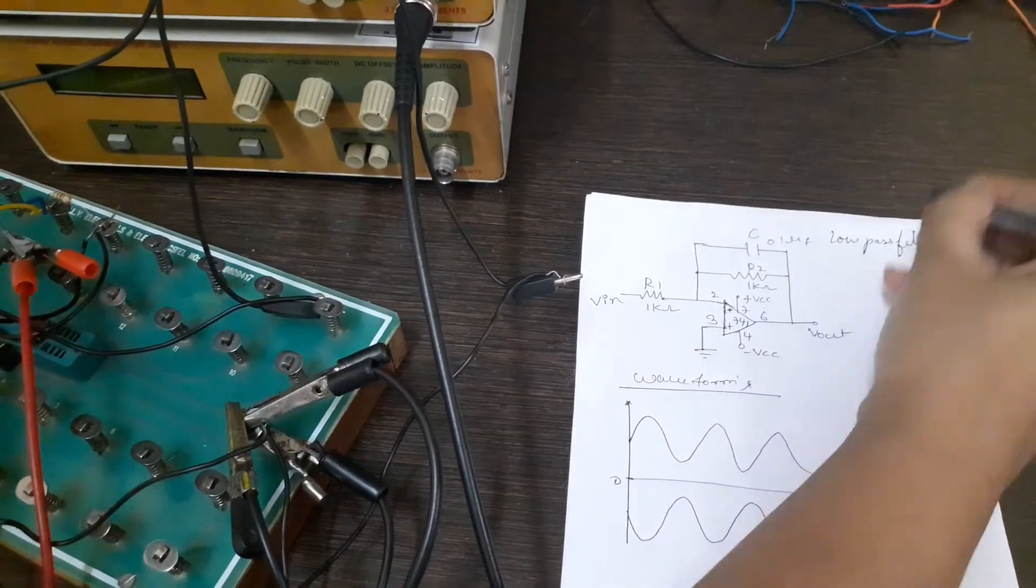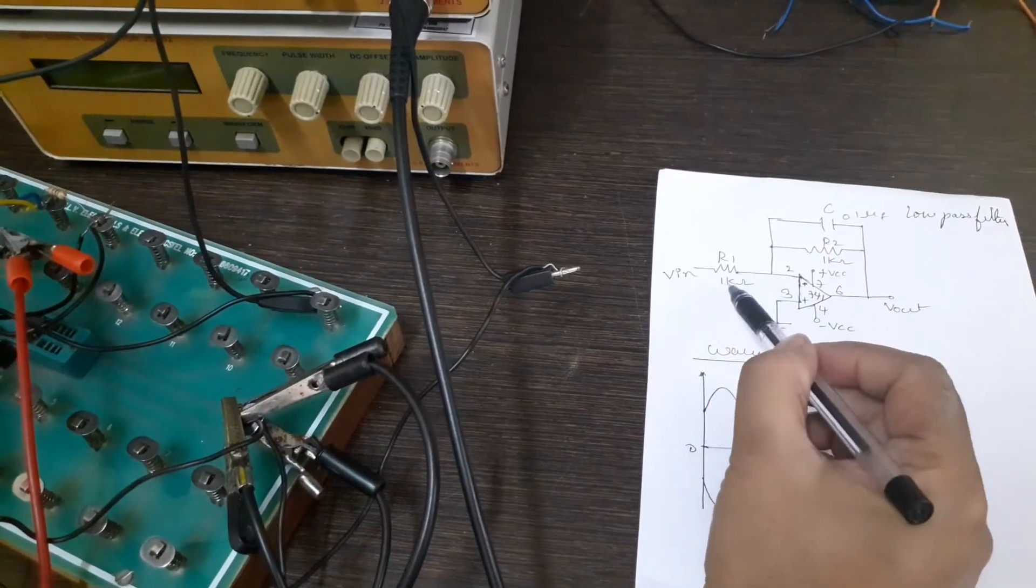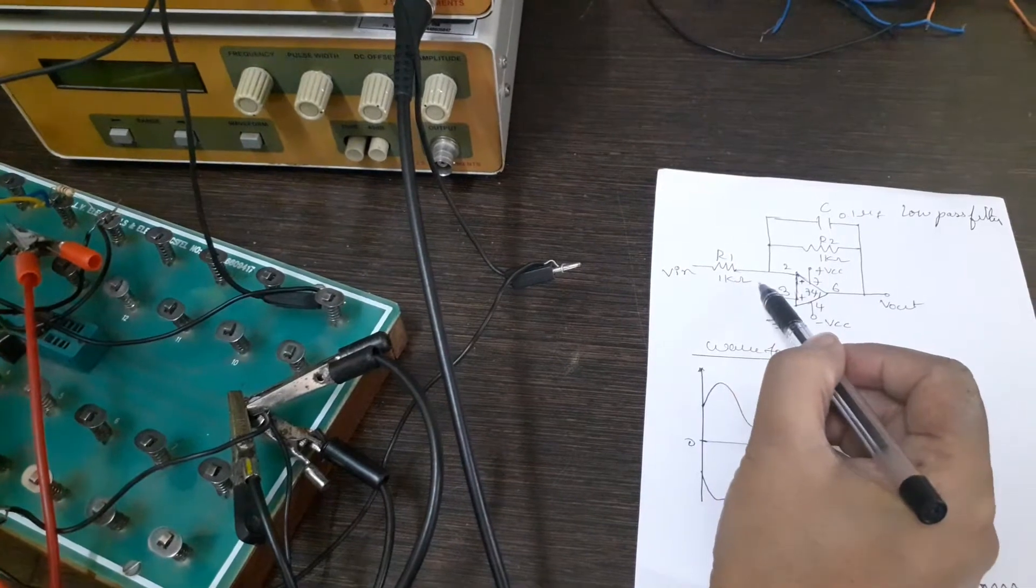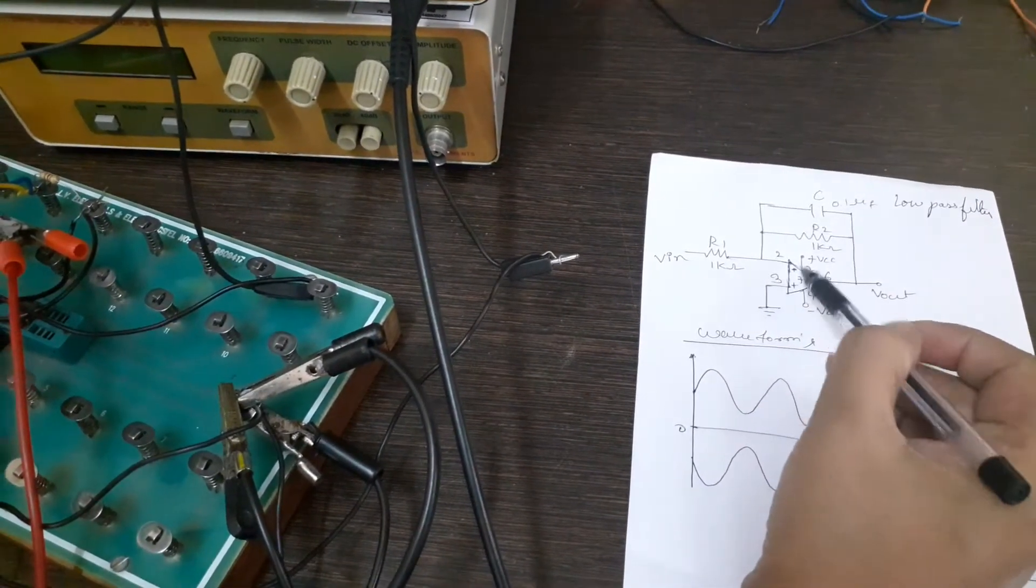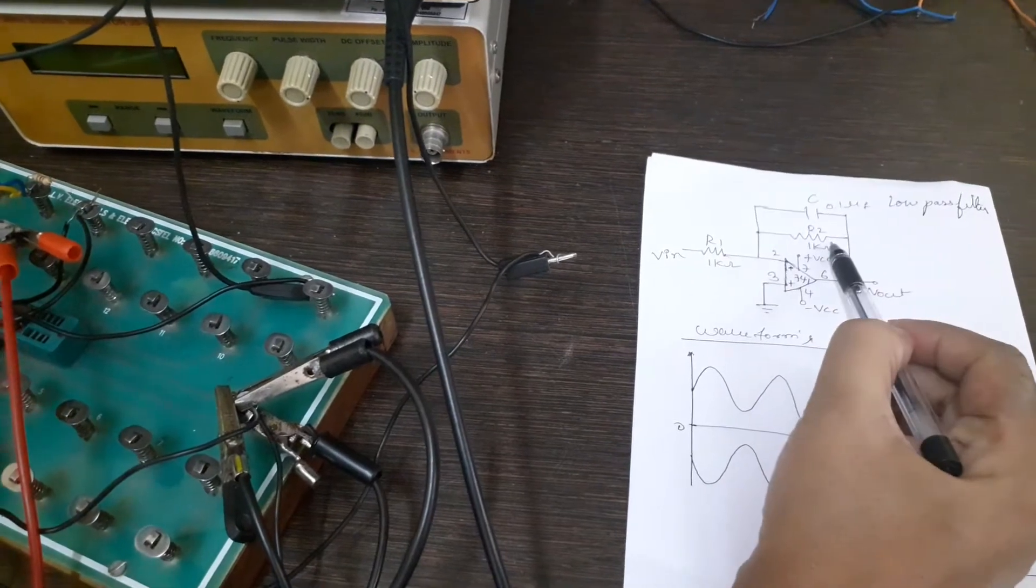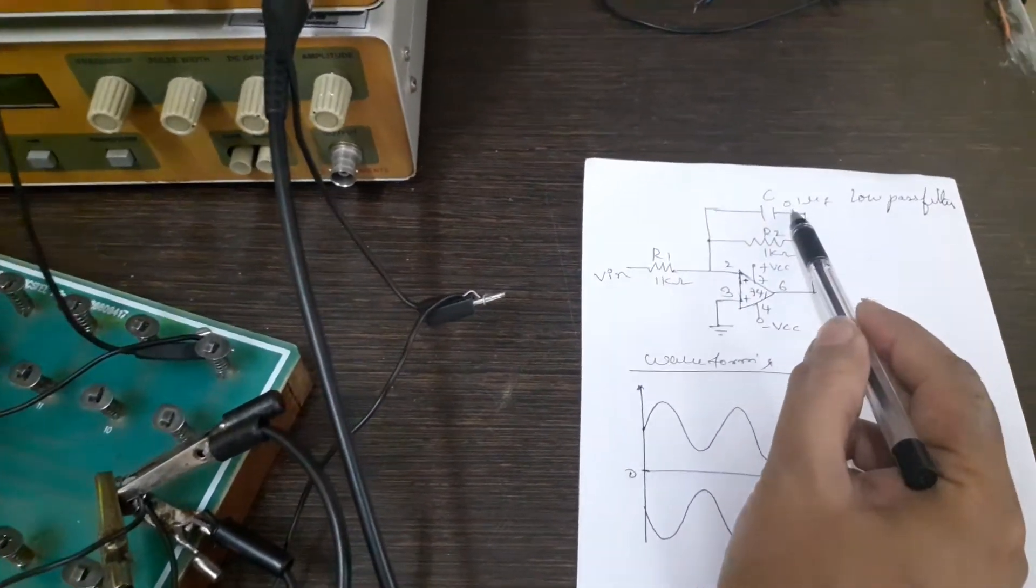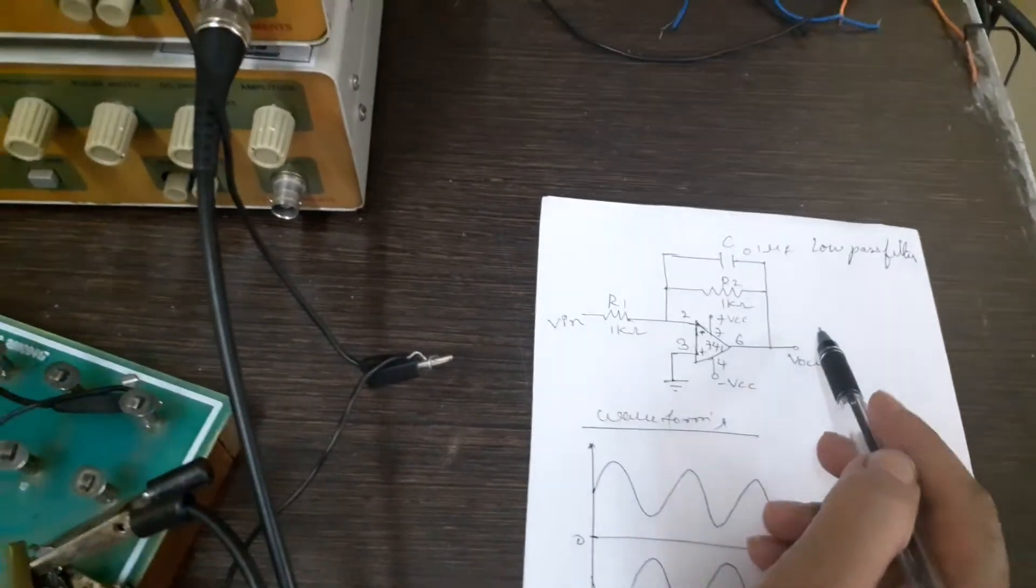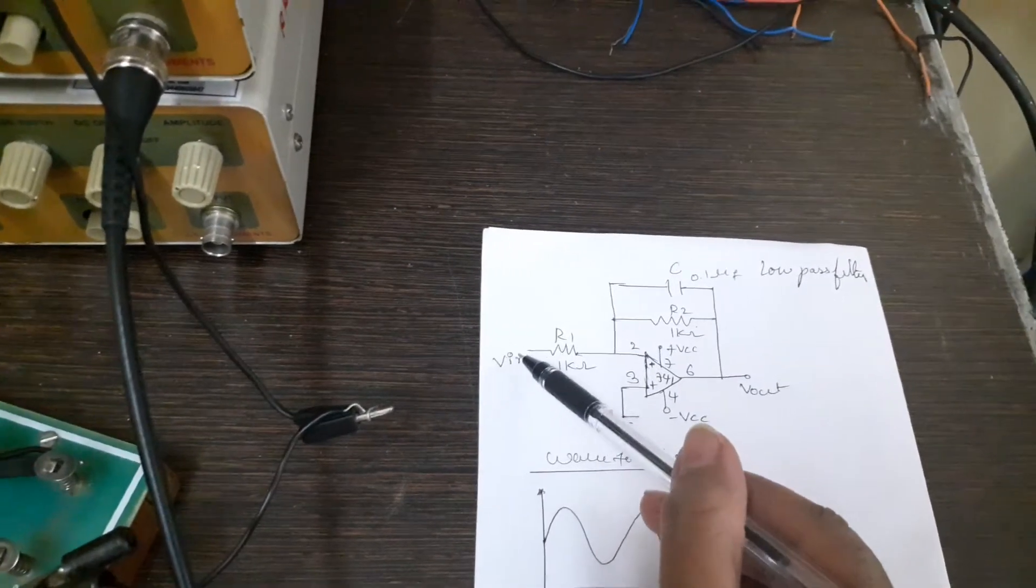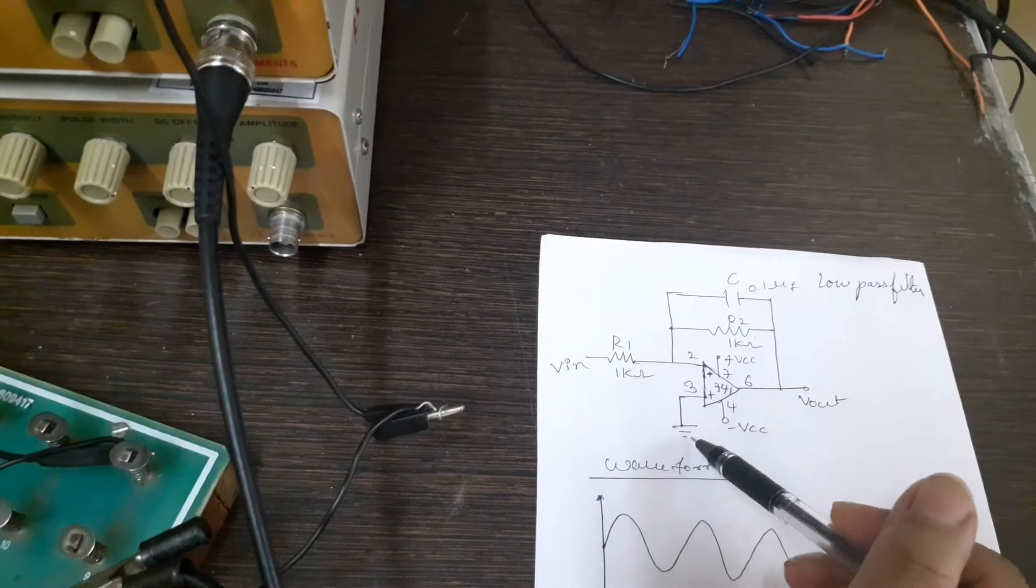So we can see that at the non-inverting terminal we have R1 of 1k. Then for the op amp we have put in parallel a capacitance of 0.1 microfarad and R2 of 1 kilohm. Now the V input we will take it here and the inverting terminal we will ground it.